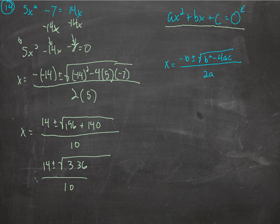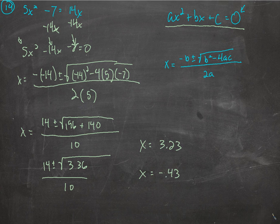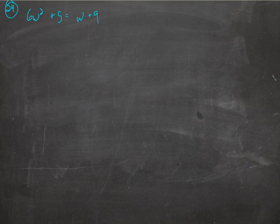So we do the plus and the minus and find the two solutions. I'll save you the time it took me to type that in the calculator: I got 3.23 and negative 0.43.